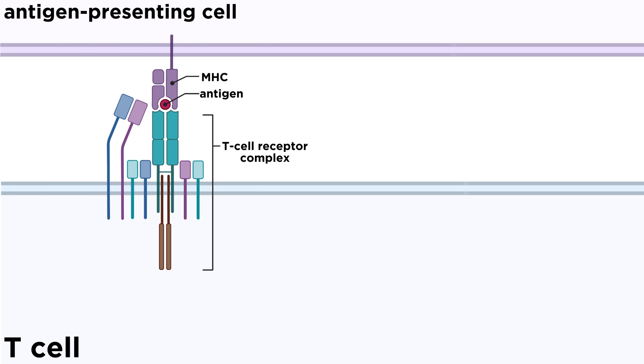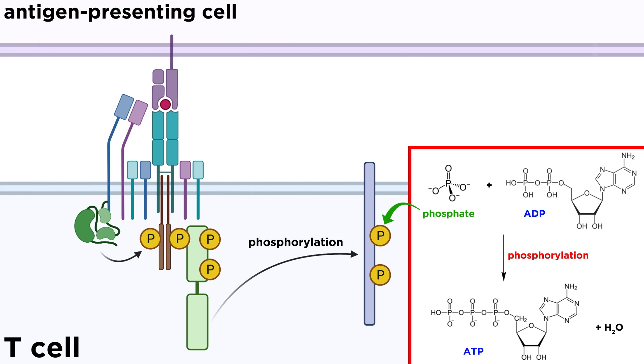Some receptors, such as B and T cell receptors, do not have built-in kinase activity, but once they and their co-stimulatory receptors bind their respective ligands, protein kinases can bind to the intracellular tails of the receptors and begin phosphorylating downstream proteins.